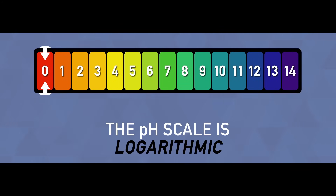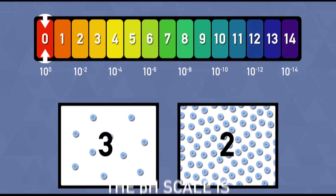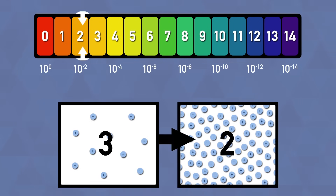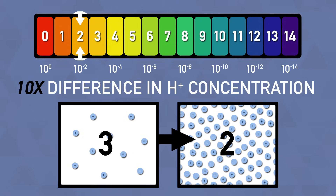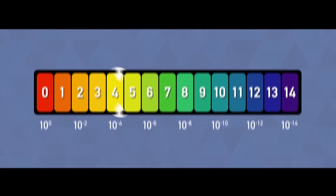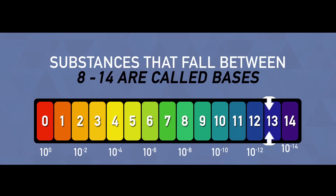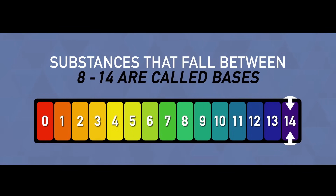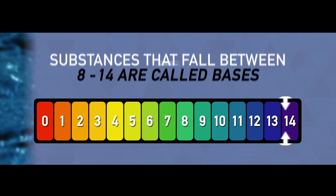The pH scale is a logarithmic one, meaning that one unit difference on the scale — say from 3 to 2 — means a tenfold difference in H+ concentration. But 0 to 7 is only half of the picture. So what about all the numbers above 7? Substances that correspond with this half of the scale are called bases, and they are the chemical opposites of acids.